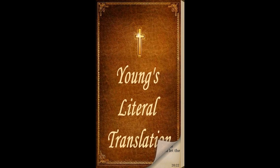Fifty loops thou dost make in the one curtain, and fifty loops thou dost make in the edge of the curtain which is in the joining of the second, causing the loops to take hold one unto another. And thou hast made fifty hooks of gold and hast joined the curtains one to another by the hooks, and the tabernacle hath been one.